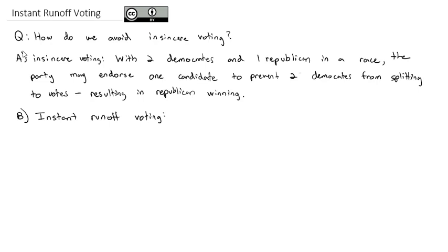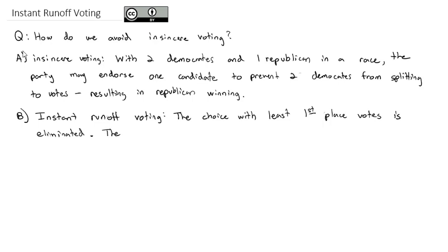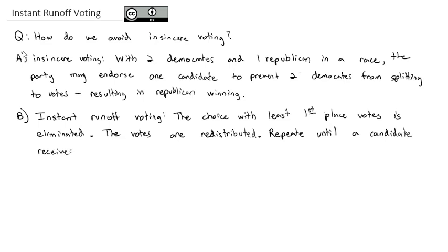How instant runoff voting works is we have a prioritized schedule of votes and results. We look at the choice with the least first place votes, and that choice is eliminated. Then the votes are redistributed, and we repeat this process until a candidate receives greater than 50% of the votes.